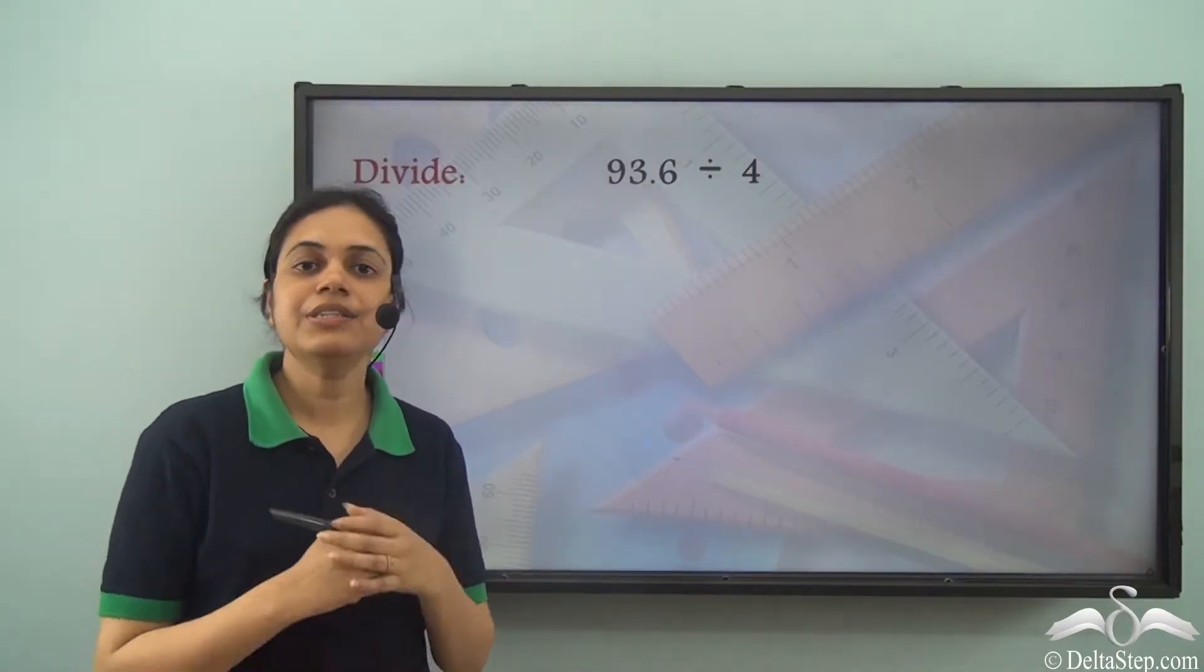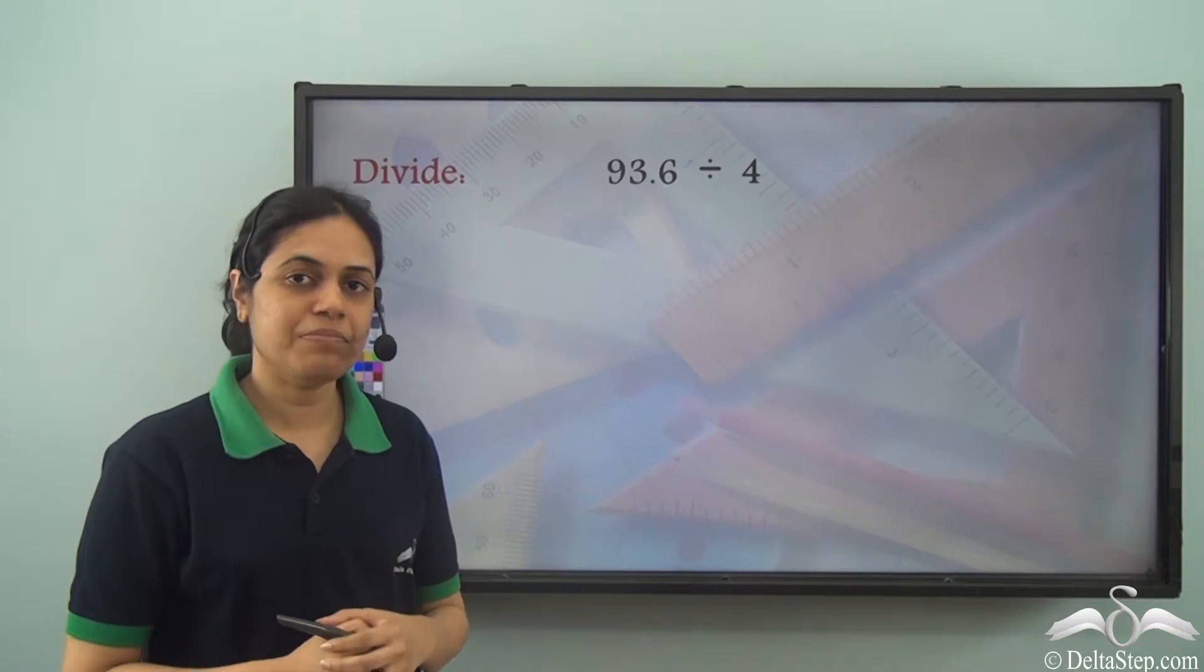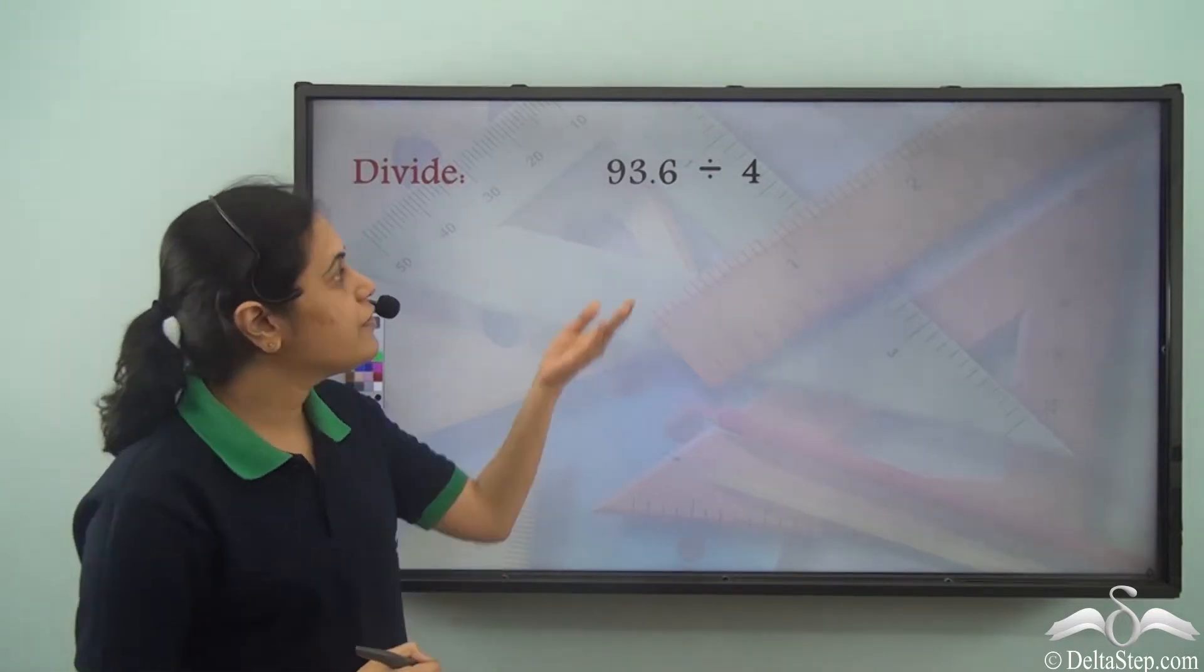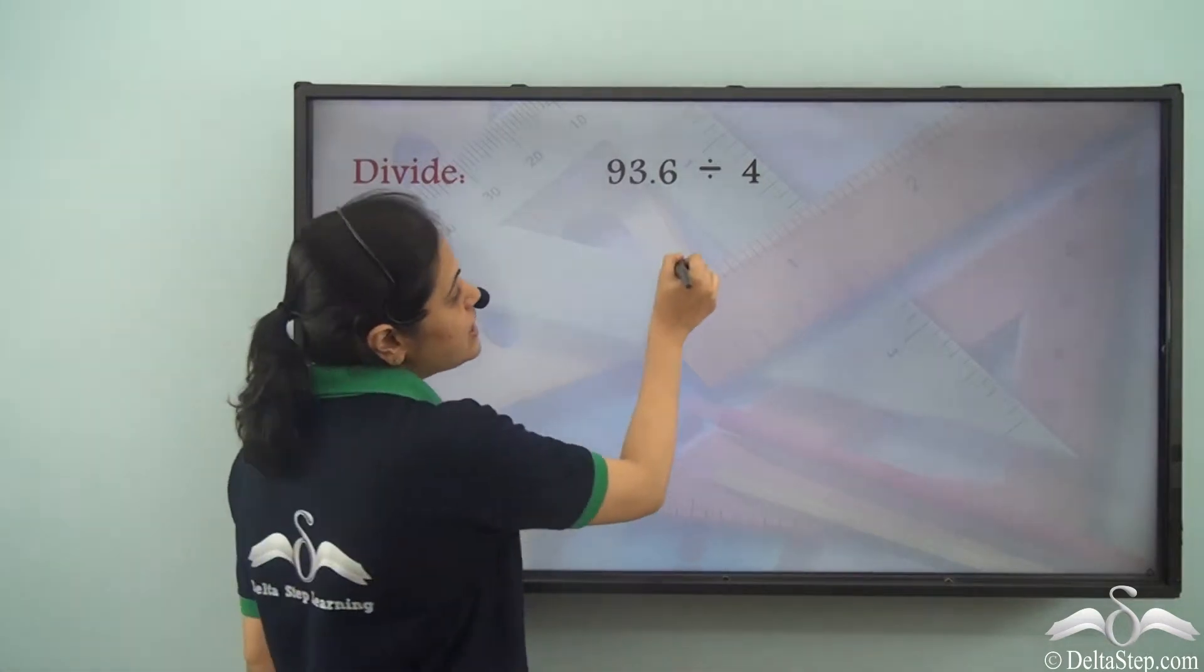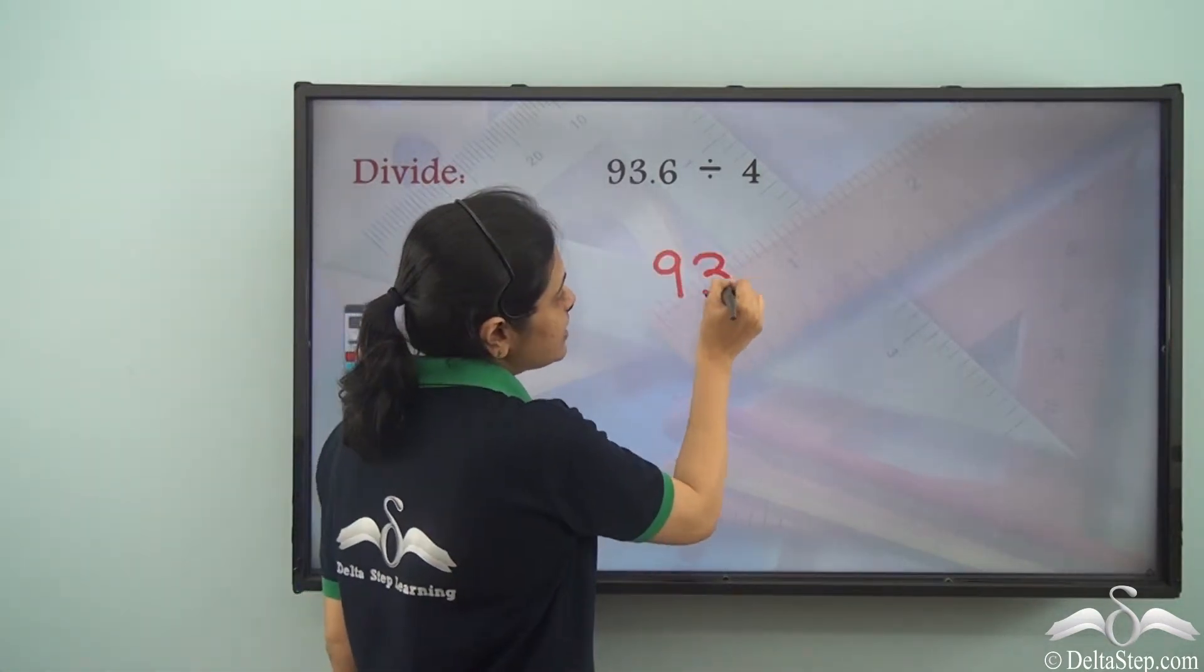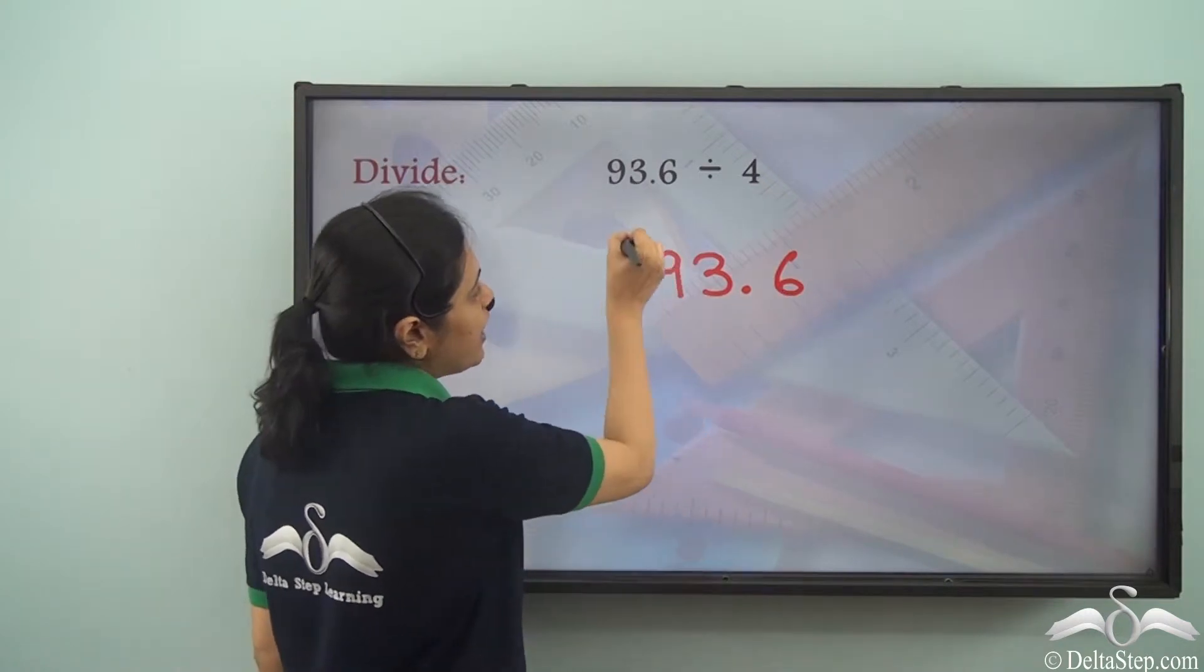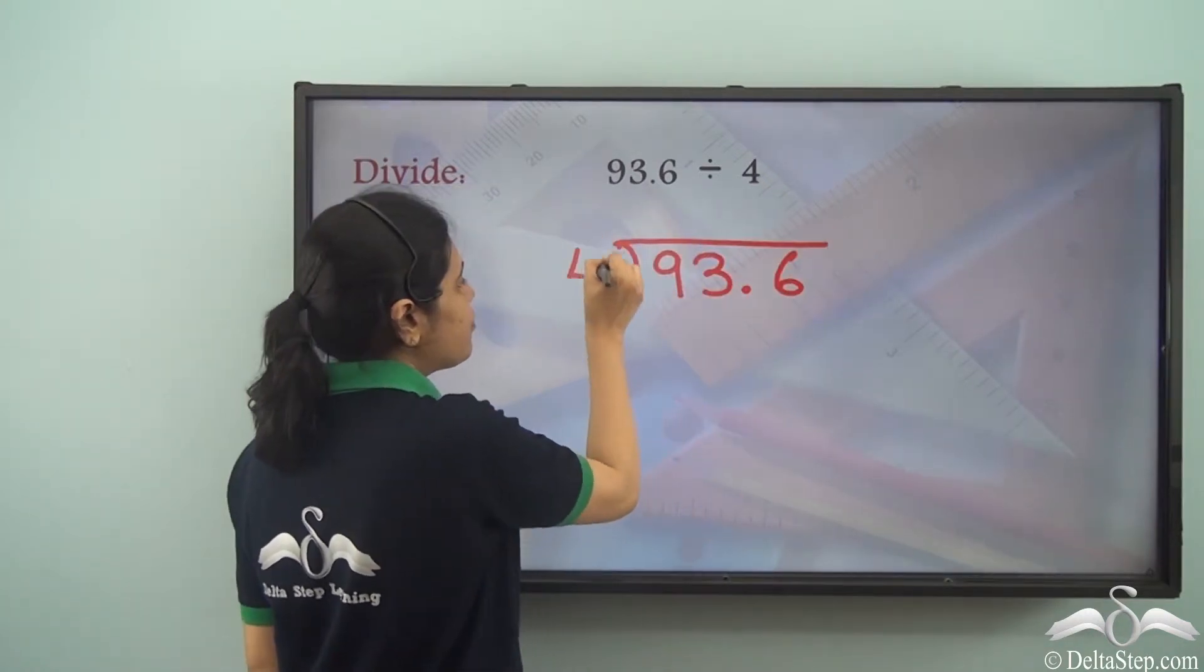Now we have already learnt how to divide decimal numbers. Over here we need to divide 93.6 by 4. So 93.6 is a decimal number and I want to divide it by 4.